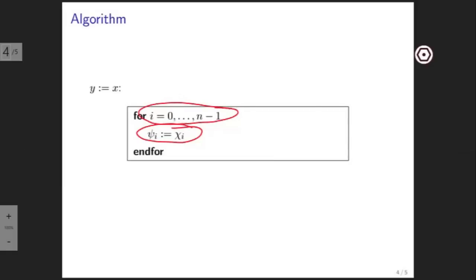We have to do this for all indices i from 0 to n minus 1. We start indexing at 0, and therefore if the vectors are of length n, we have to run this till n minus 1. We create an algorithm for this assignment by writing this as a for loop. So all this says is that for every index i from 0 to n minus 1, psi sub i must be set to chi sub i.